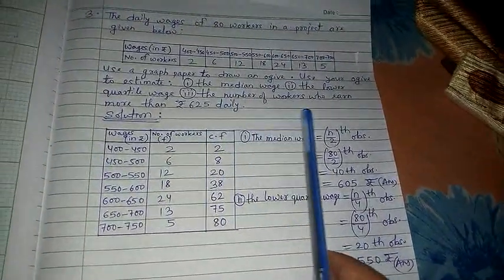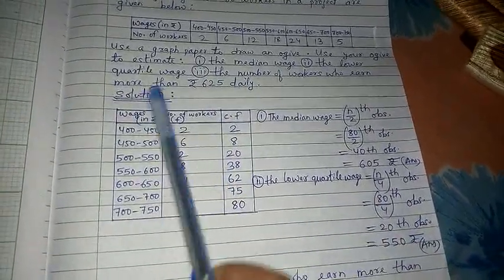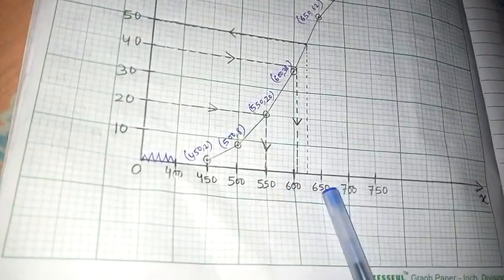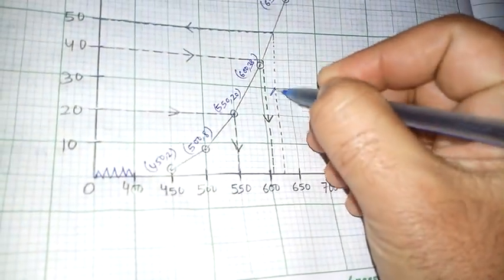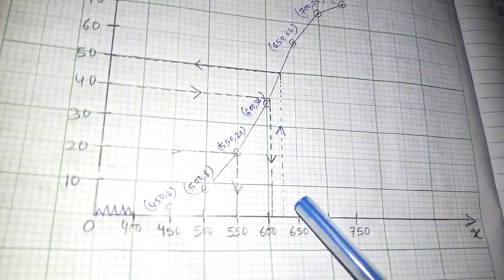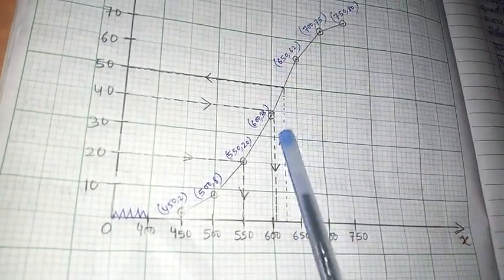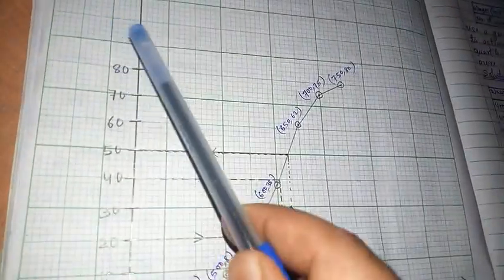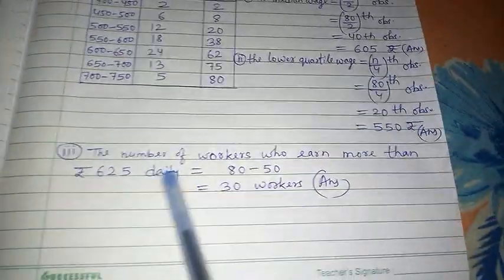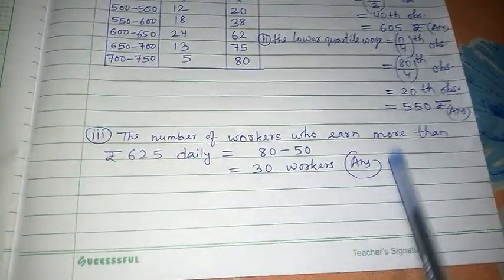Next, the number of workers who earn more than 625 rupees daily. In this kind of number question, go to 625 down here. Where is 625? Here is 600, here is 650. Middle of both will be 625. The graph will go from down to up. It is going from here to there, and after reaching here it reached here. It means 50 now. That means my answer will be 80 minus 50. Number of workers earning more than 625 daily will be 80 minus 50, that is 30 workers.